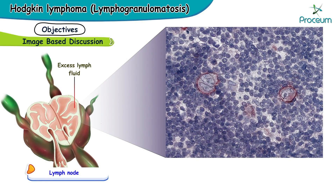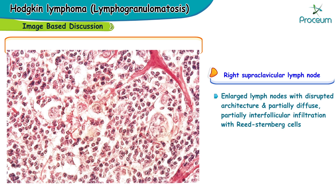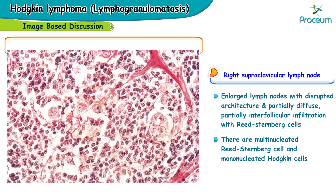Here's the beautiful histopathological picture showing a right supraclavicular lymph node. You can visibly see that the architecture of this enlarged lymph node is disrupted and partially diffused, with partially interfollicular infiltration with Reed-Sternberg cells looking like owl's eyes. There are also multinucleated Reed-Sternberg cells and some mononucleated Hodgkin cells.